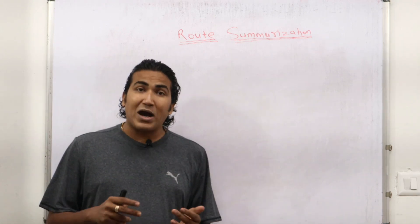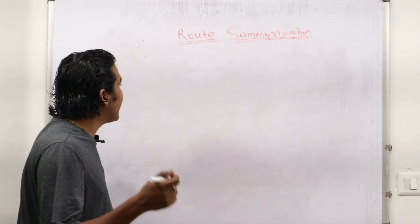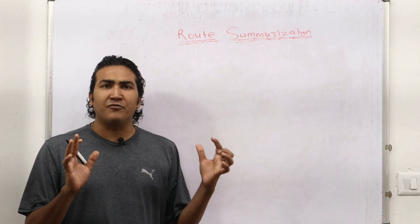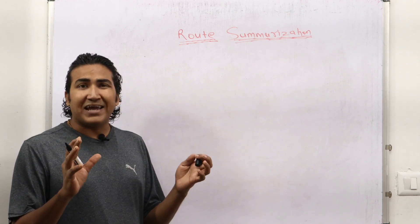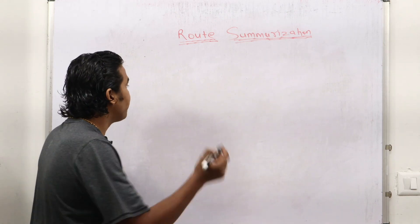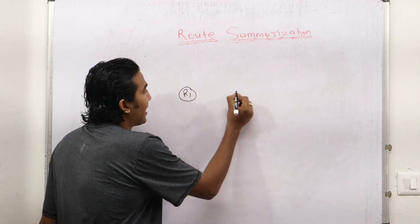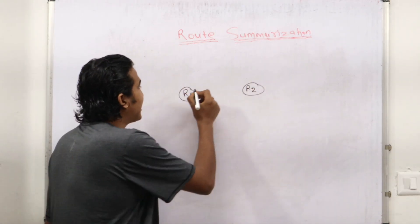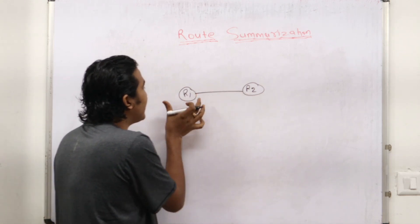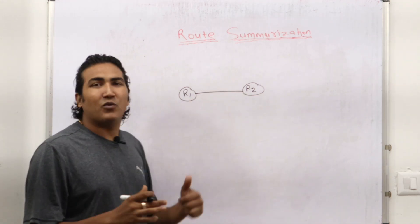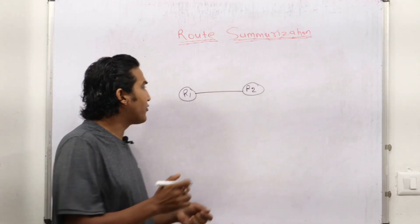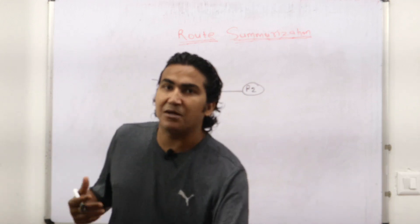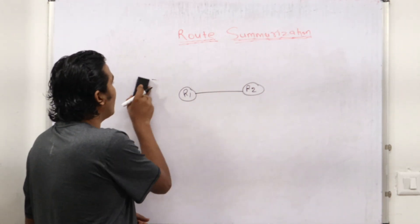First, try to understand why we need route summarization. So let's say I have a very simple topology with two routers only - let's say Router 1 (R1) and one more router, R2. R1 and R2 are both directly connected. And let's say Router 1 has some prefixes - received from their neighbor or from any other router, or maybe these prefixes are directly connected on Router 1.